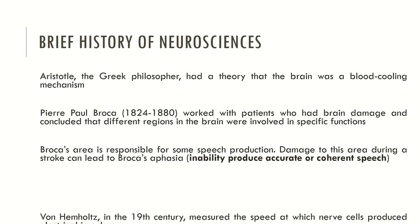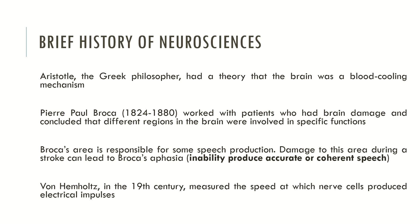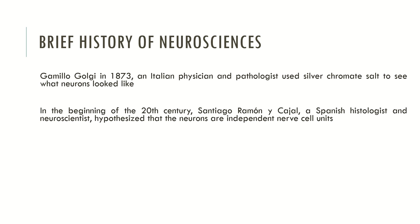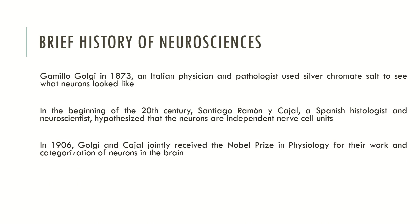Helmholtz, in the 19th century, measured the speed at which nerve cells produced electric impulses. Camilo Golgi, an Italian physician and pathologist, used silver chromate salt to visualize what neurons look like. In the beginning of the 20th century, Santiago Ramón y Cajal, a Spanish histologist and neuroscientist, hypothesized that neurons are independent nerve cell units. Golgi and Cajal jointly received the Nobel Prize in Physiology for their work and categorization of neurons in the brain.